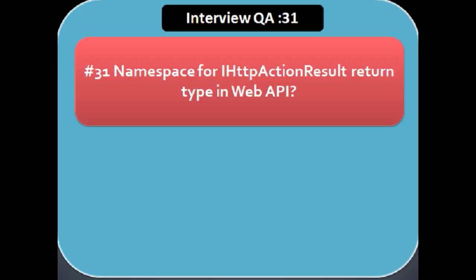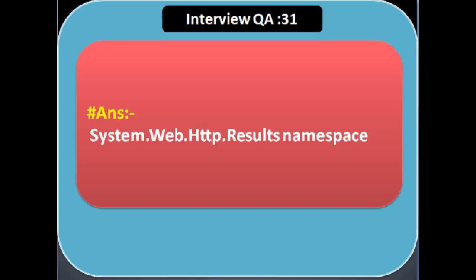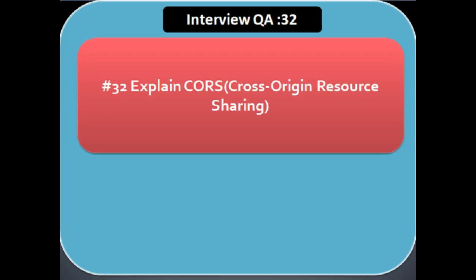Next question: what is the namespace of the IHttpActionResult return type in Web API? The answer is System.Web.Http.Results namespace. Next question: explain CORS — that is Cross-Origin Resource Sharing.